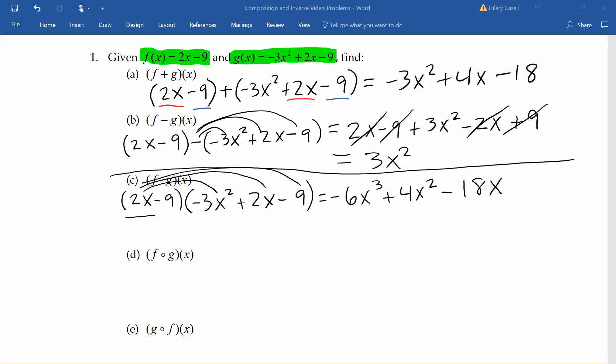We'll take our second term in the first parentheses, that negative 9, and distribute it to each of those three terms. I like to write my terms below the first terms to make it easier to combine like terms for a final answer of negative 6x cubed plus 31x squared minus 36x plus 81.